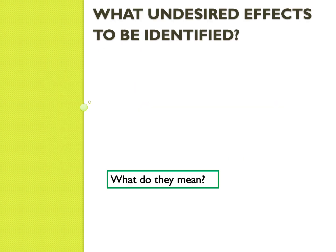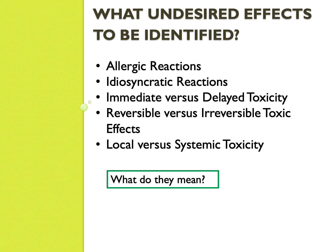The undesirable effects that could happen when a person takes a drug include allergic reactions — a person can be allergic to literally anything, like some people are allergic to peanuts while others are fine. Idiosyncratic reactions are those where we don't really know why they happen. Some effects are immediate, some are delayed, some reversible, some irreversible. The irreversible ones are the ones to be most careful of, because you cannot reverse the toxicity effects even if you stop the drug.